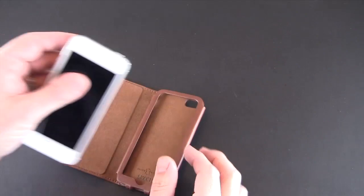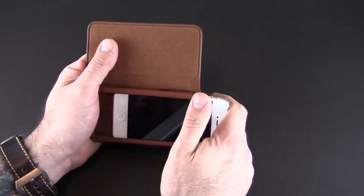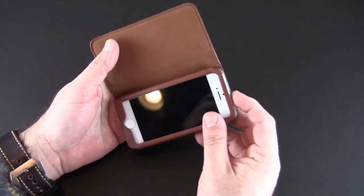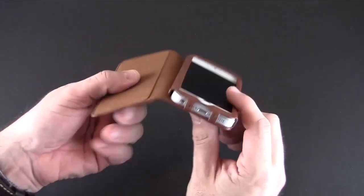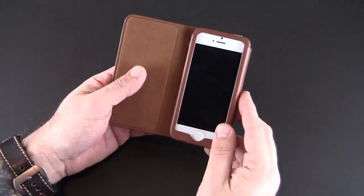It's top loading so you simply line the iPhone up and push it in. It's a very tight fit. I do have a tempered glass screen shield on my phone which I think contributes to the tightness, but that's a good thing. You don't want it falling out and it definitely does not feel as though it might fall out.